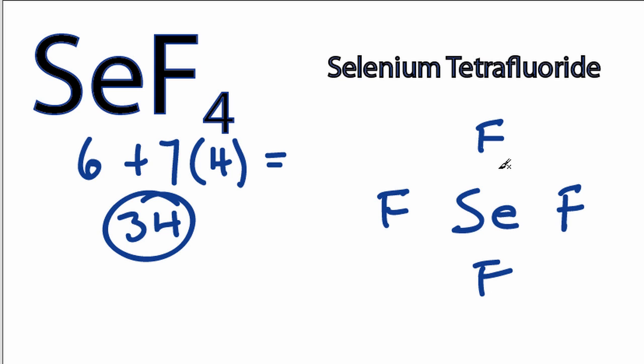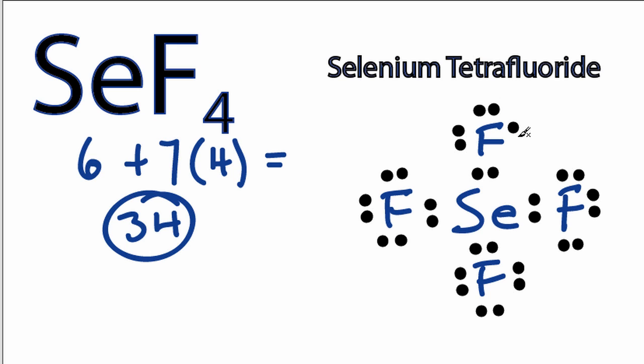We've got 34 valence electrons. We'll put 2 between atoms to form the chemical bonds. There's 8 and then around atoms, 10, 12, 14, and 32, but I have 34 total.